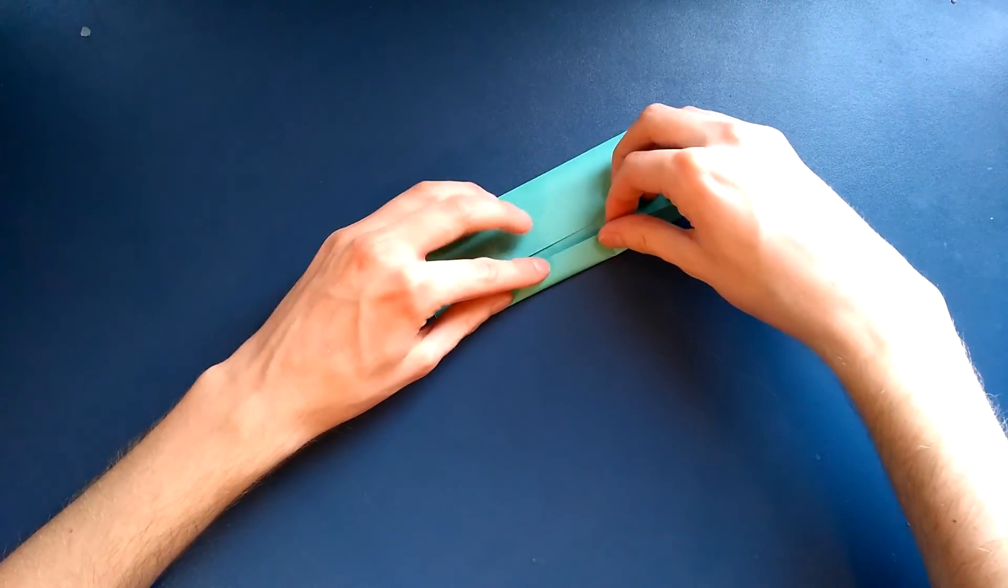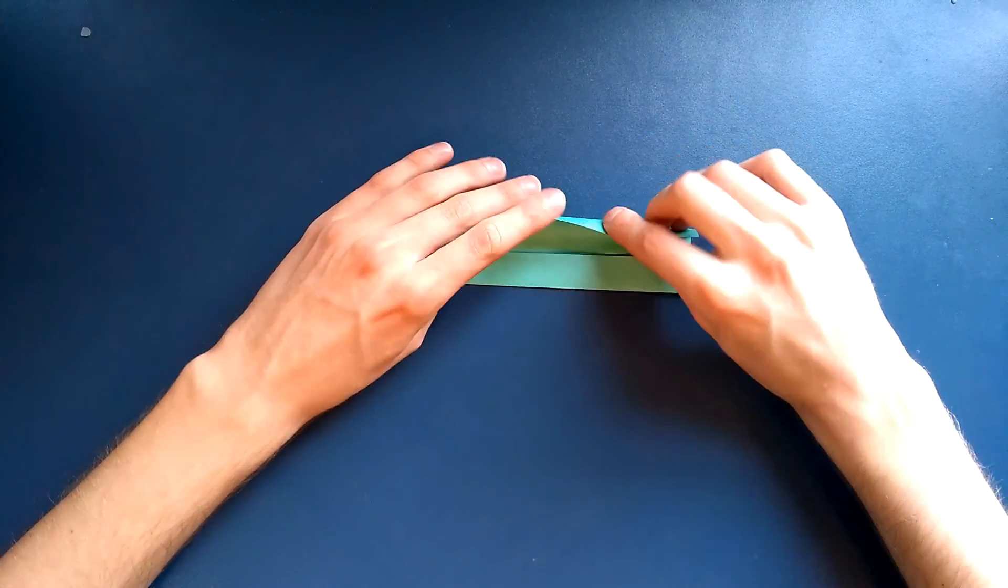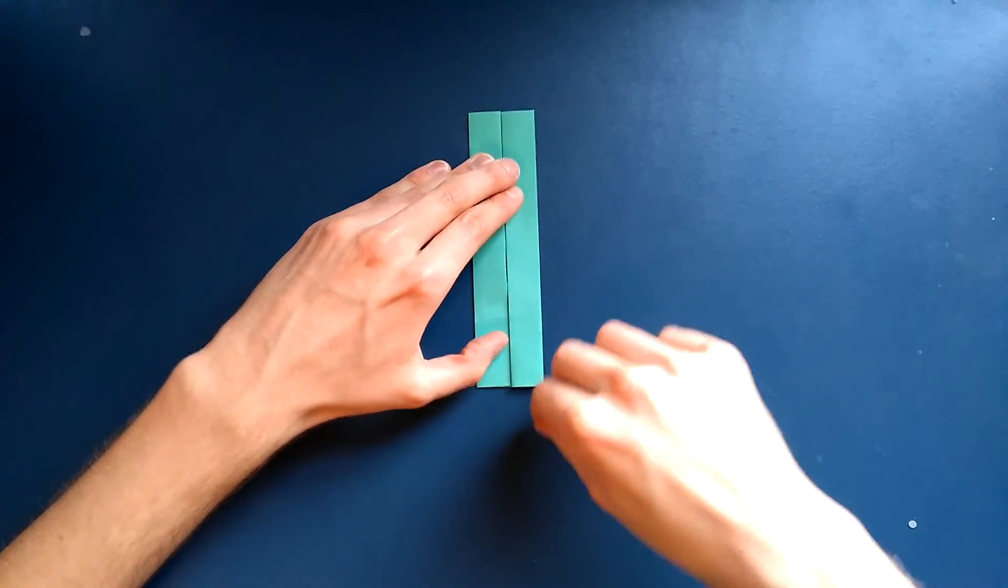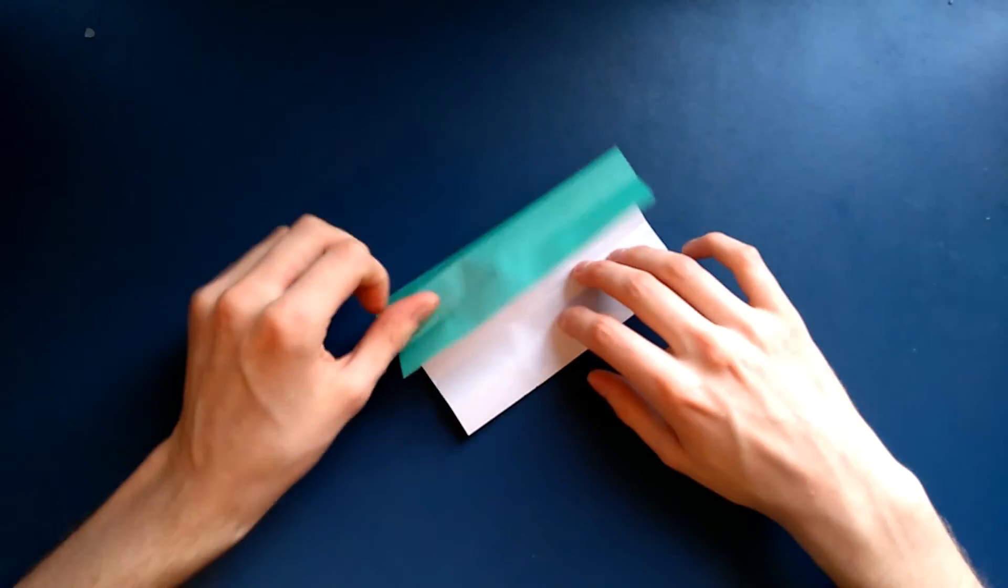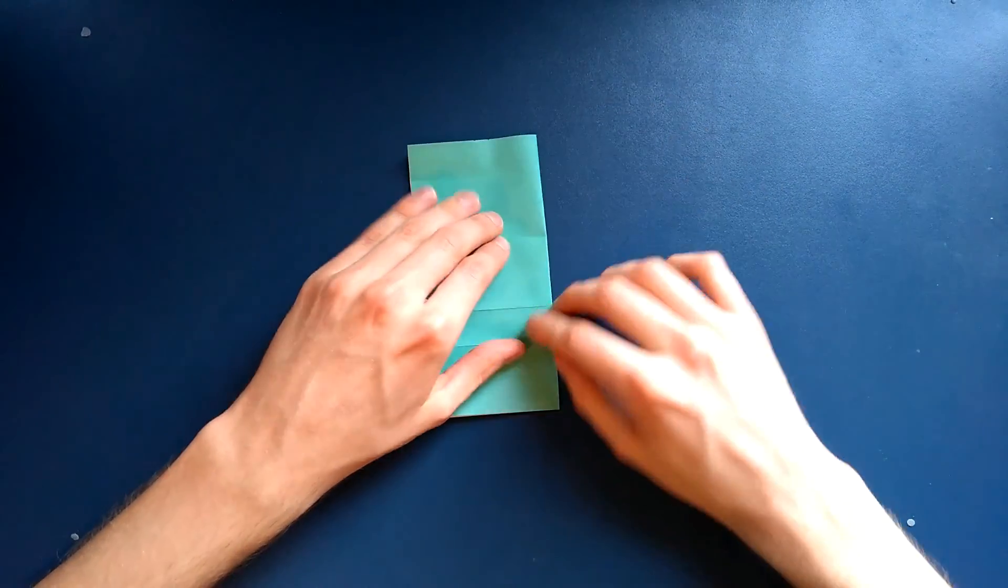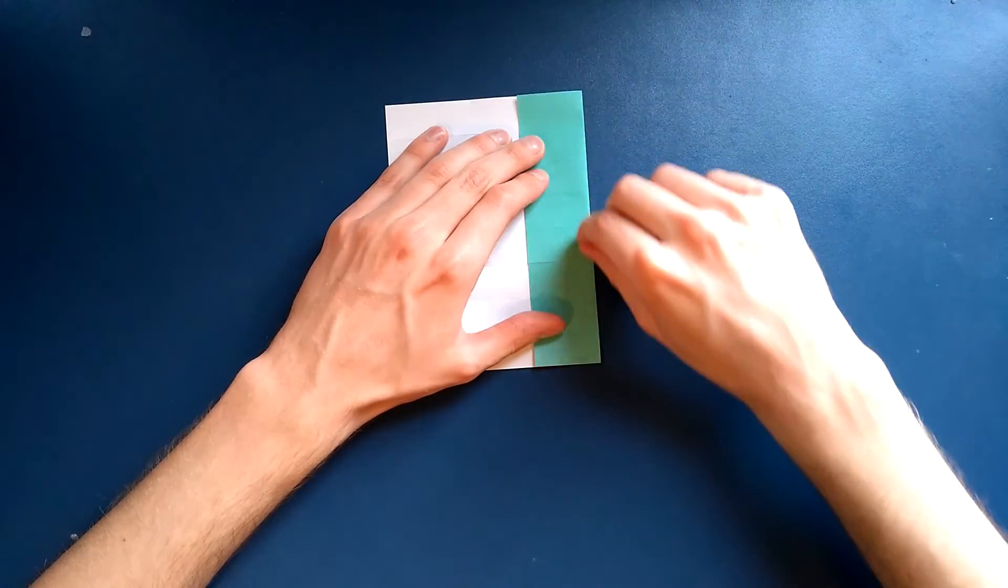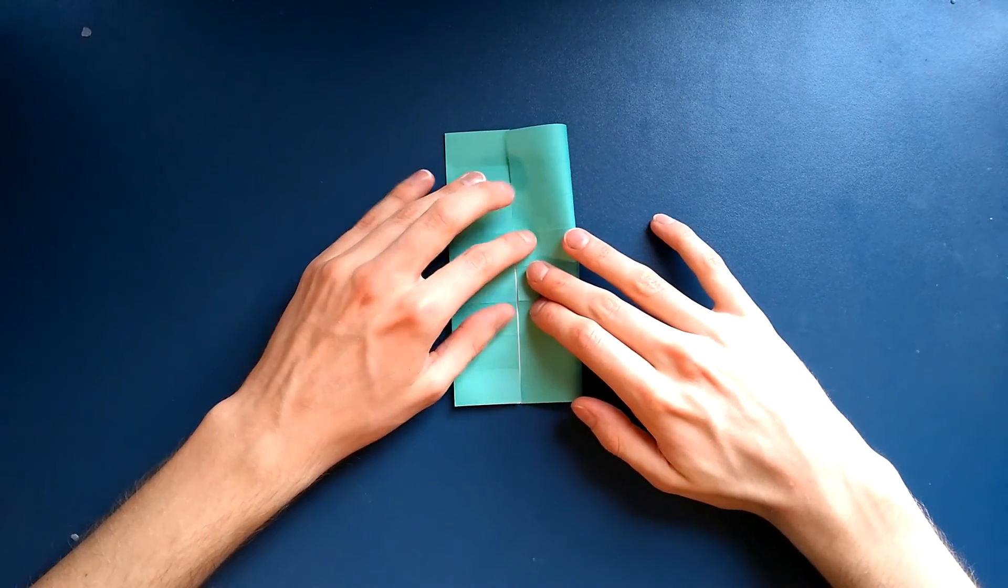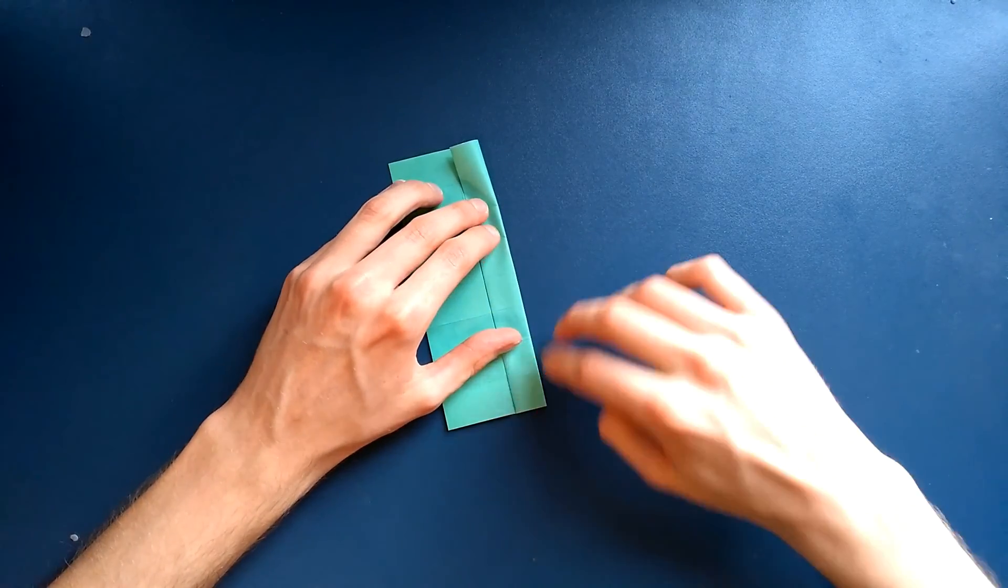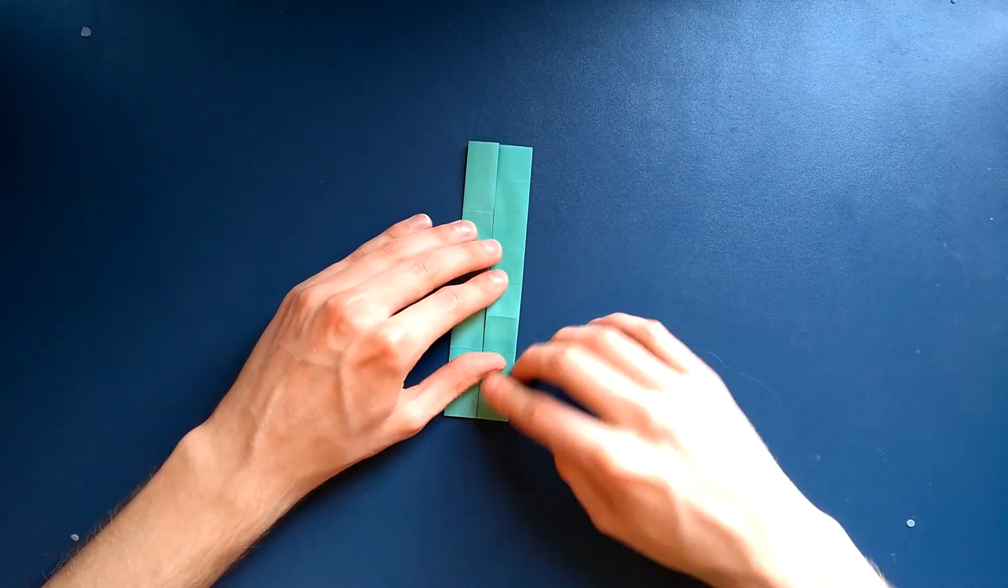And now folding the edges in again. Then opening it up and folding it in the opposite direction, half again. And exactly as before, just keep folding those edges into the center until you've got your 8 by 8 square grid.